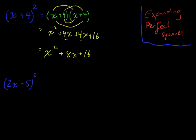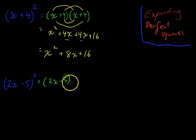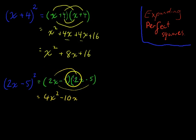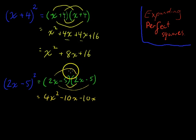Now if I do one more example: 2x minus 5 squared. That's going to be the same as 2x minus 5 times 2x minus 5. We do the same thing as always. First: 2x times 2x is 4x squared. Outer: negative 5 times 2x is negative 10x. Inner: negative 5 times 2x is also negative 10x. And last: negative 5 times negative 5 is positive 25.